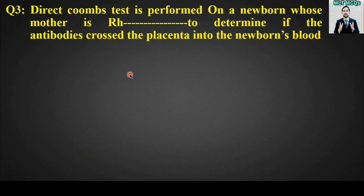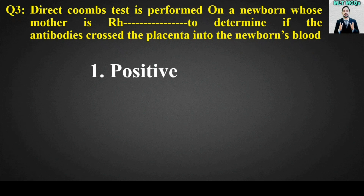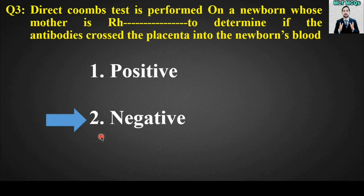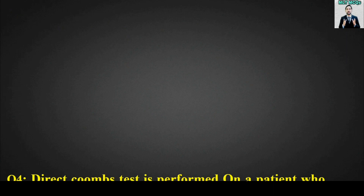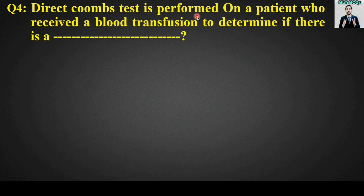MCQ number three: The direct Coombs test is performed on a newborn whose mother is Rh blank, to determine if the antibodies crossed the placenta into the newborn's blood. Options: positive or negative. The right answer is option number two — negative. The direct Coombs test is performed on a newborn whose mother is Rh negative.